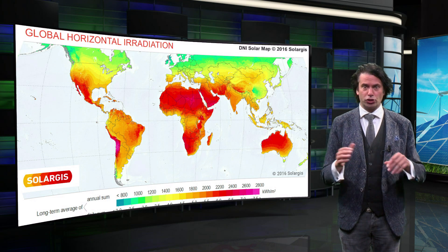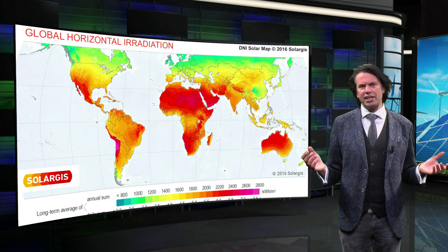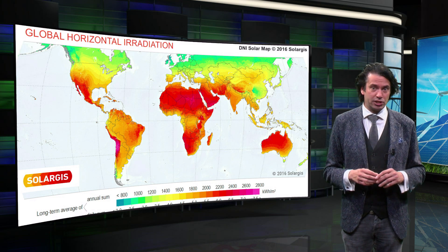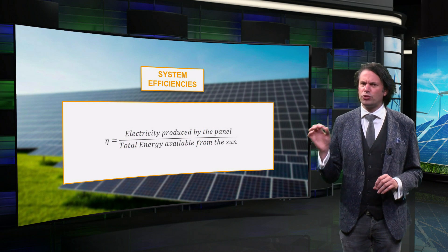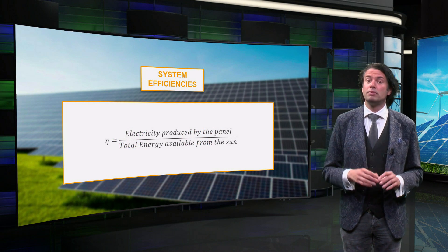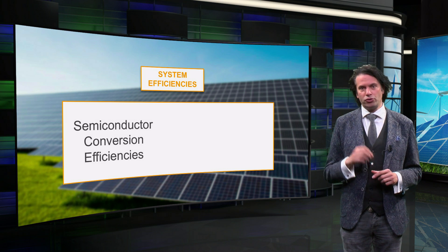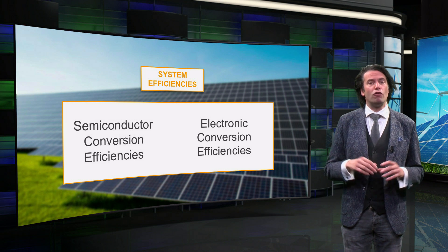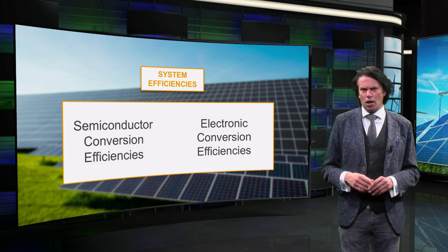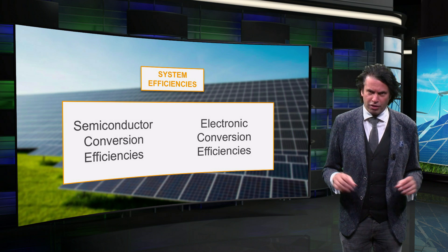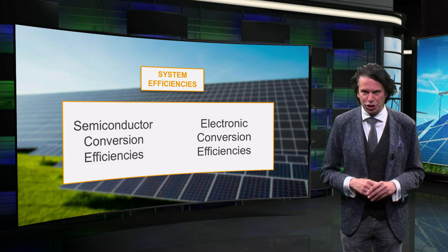The irradiance is highest for locations around the equator and decreases toward the poles. Global irradiance data has been made available by organizations like Solaris and NASA. The efficiency of a photovoltaic system is equal to the energy output of the system divided by the energy potential of the sun. This includes semiconductor conversion efficiencies and the efficiencies of system components like inverters, batteries and cables. Most commercially available solar modules have an efficiency between 10 and 25 percent, depending on the technology used.